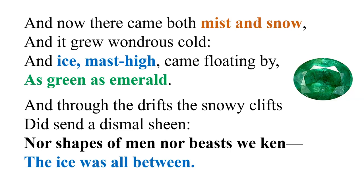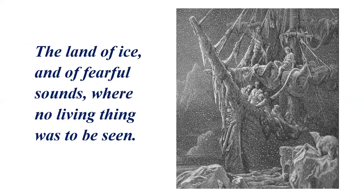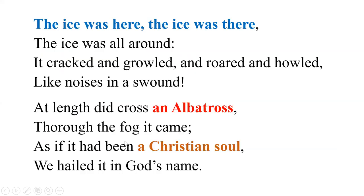'Nor shapes of men nor beasts we ken' — they cannot see anything in front of them. Even those nearby cannot be seen; the ice was all between. The gloss reads: 'The land of ice, and of fearful sounds, where no living thing was to be seen.' Then: 'The ice was here, the ice was there, the ice was all around. It cracked and growled and roared and howled, like noises in a swound.'